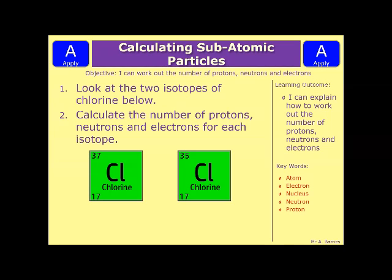Let's have a look at a couple of questions. This one, we've got two different isotopes of chlorine, and it's asking you to calculate the number of protons, neutrons and electrons for each isotope. So, think back to what we've done in the rest of the video. Have a go at it, pause the video, and we'll see if you're right in a minute.